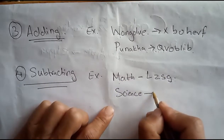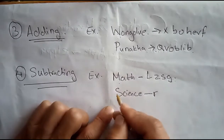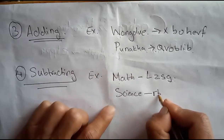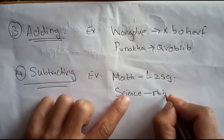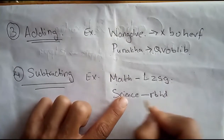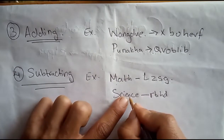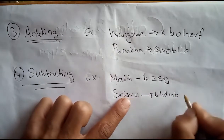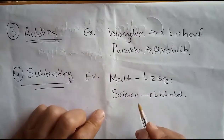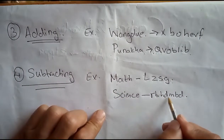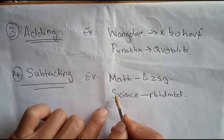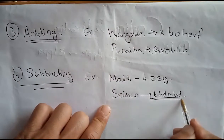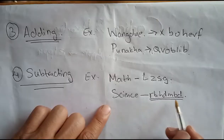So in the subtraction method: S is called R, C is called B, I is called H, E is called D, N is called M, C is called B, E is called D. So SCIENCE would be coded as RBHDMBD.